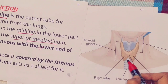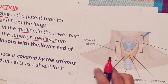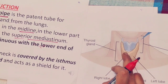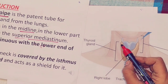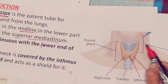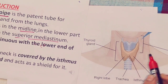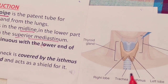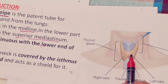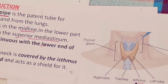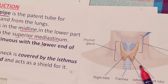The neck part of the trachea is covered by the thyroid gland. The thyroid gland has two lobes connected by the isthmus. The anterior part of the trachea is covered by the isthmus of the thyroid gland, which provides protection.